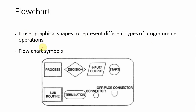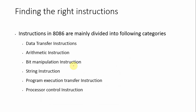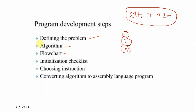For flowchart purposes, we use different types of flowchart symbols. For a process, we use a square/rectangle. For input/output, we use a rectangular bracket. For start, we use a circle. For a connector, we use a small circle. For a decision, we use a diamond shape. These are the different types of flowchart symbols. The next development step is choosing instruction; also covered are define the problem, algorithm, flowchart, and initialization checklist.